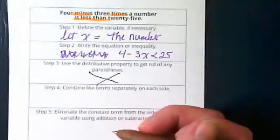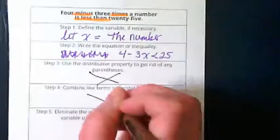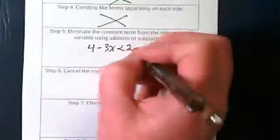Do we have any like terms to combine on either side? So we are jumping down to this step, step 5, and we are going to rewrite our inequality here. 4 minus 3x is less than 25.